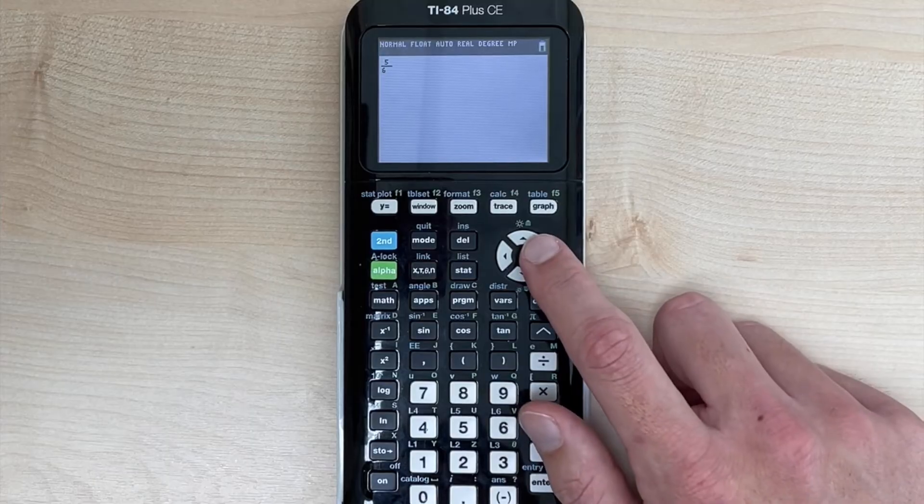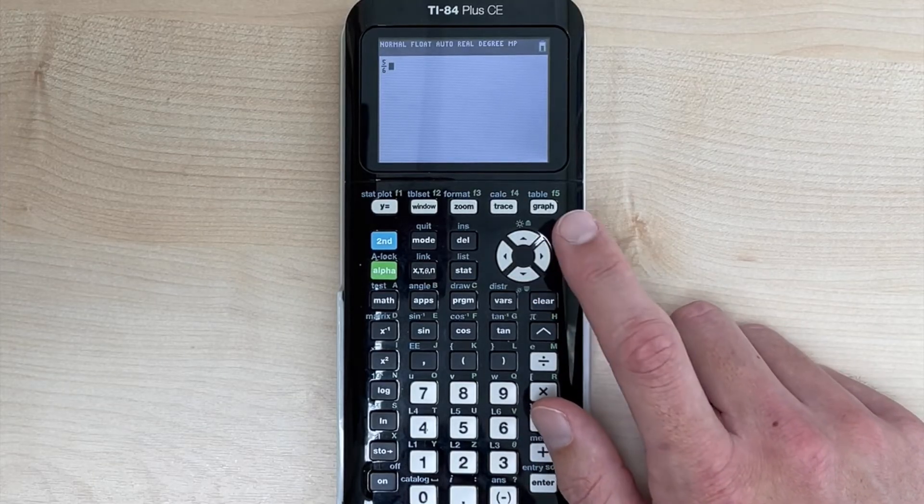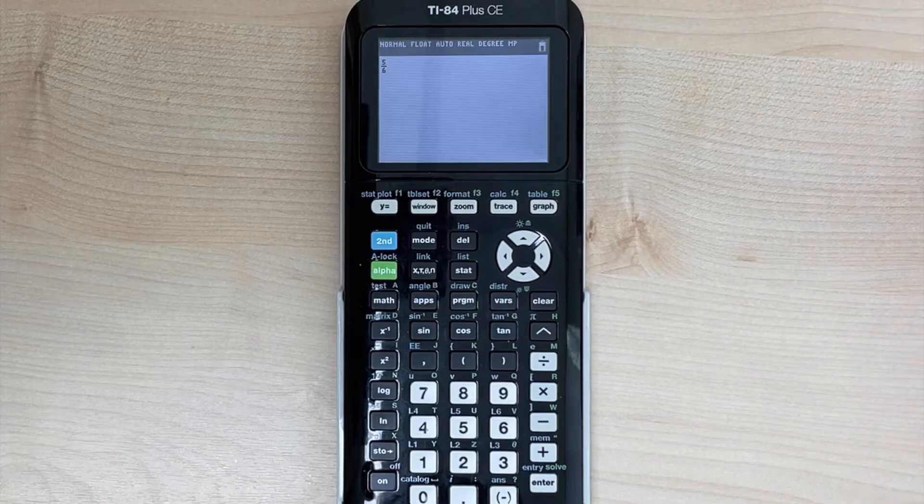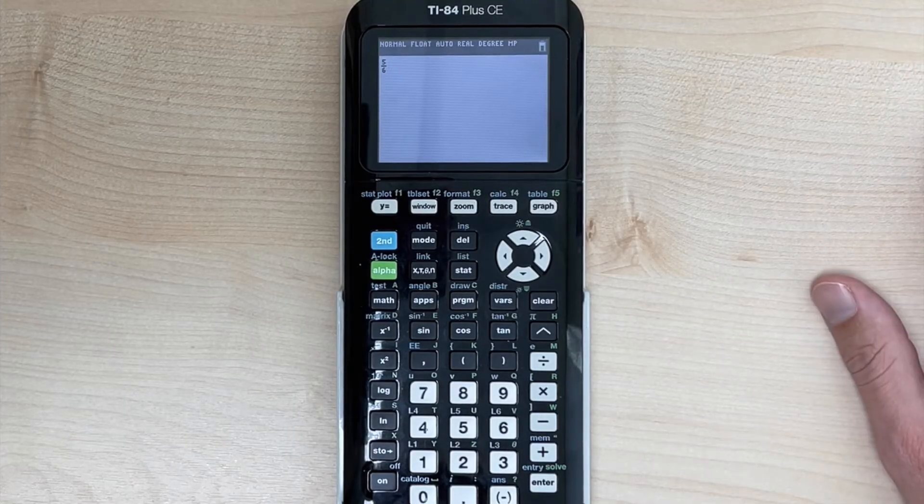And we can type whatever we need in the bottom and hit the right directional key to get out of the fraction. And so we have just typed five sixths into our calculator.